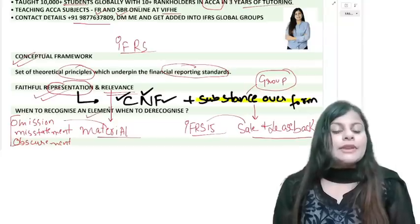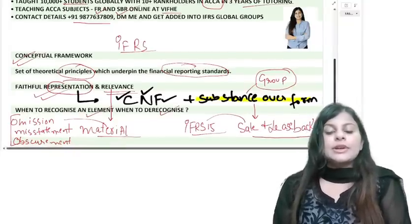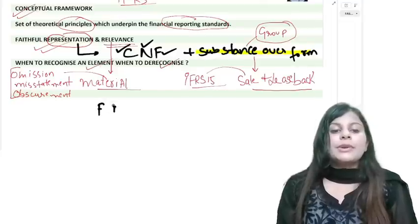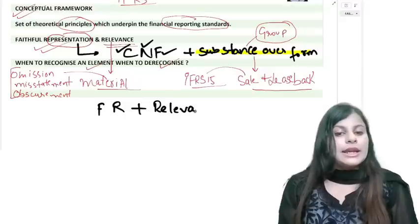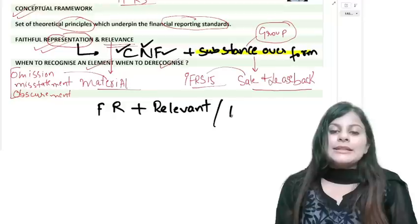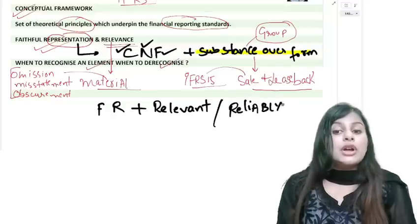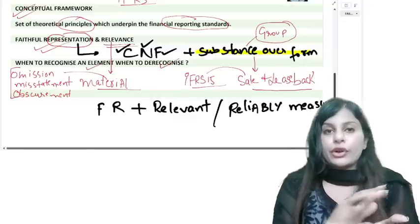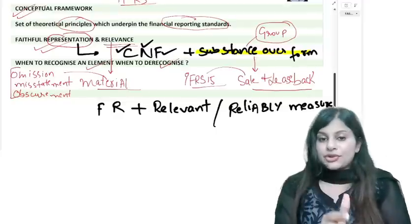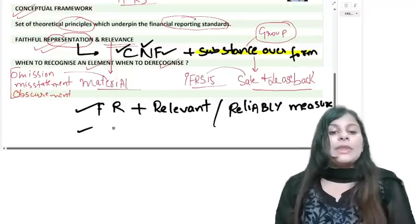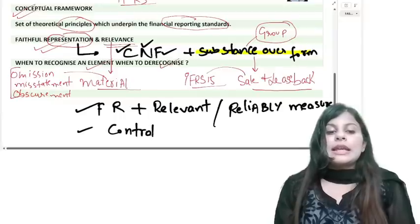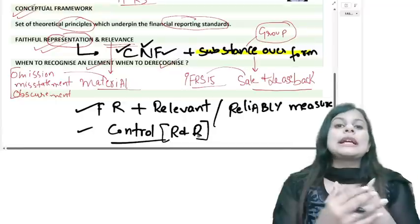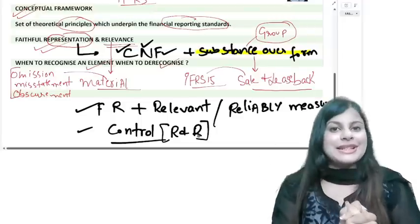We recognize an element in financial statements when it has faithful representation, gives relevant information, and can be reliably estimated. We derecognize something when control has passed — when you no longer have the risk and reward of that particular item. These are the core recognition and derecognition principles of the Conceptual Framework.